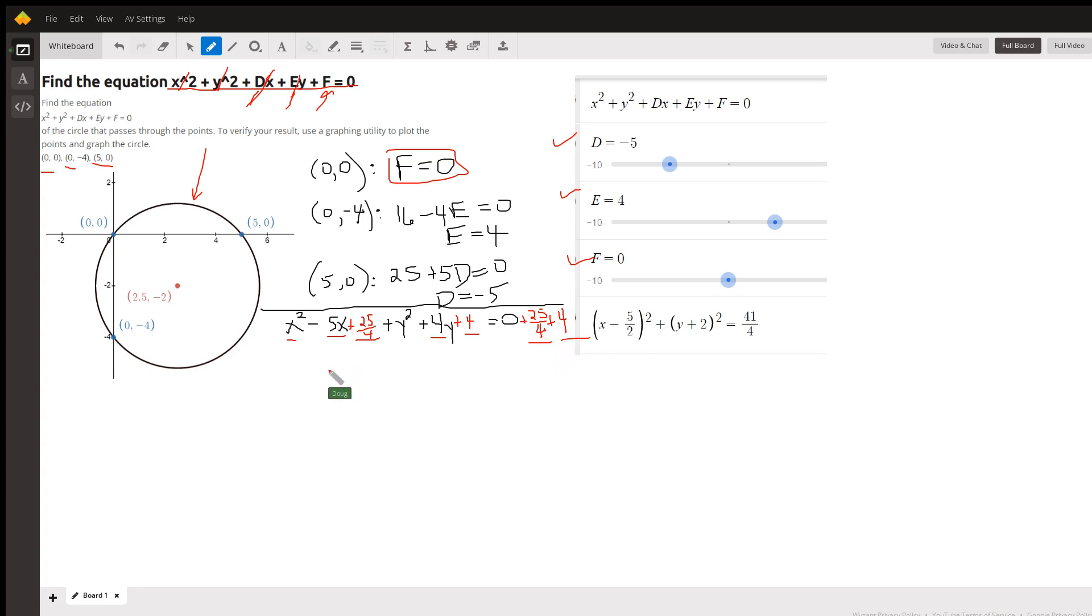We have to add those same numbers to the right side of the equal sign. And then we can convert these perfect square trinomials into binomials squared, as shown here. Combine the fractions on the right side.